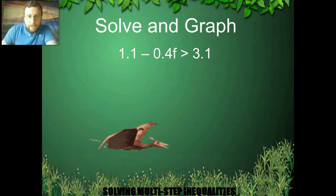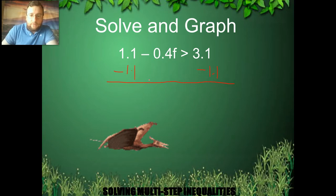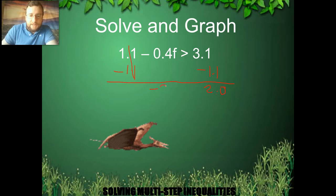For the next problem, I start by subtracting 1.1 from both sides, since 1.1 is added to my variable. The 1.1 cancels out on the left. On the right, 3.1 minus 1.1 gives 2.0, or just 2. I still have negative 0.4F on the left side. Because I only subtracted, I don't have to change the sign — it stays bigger than.